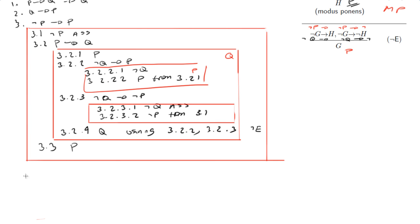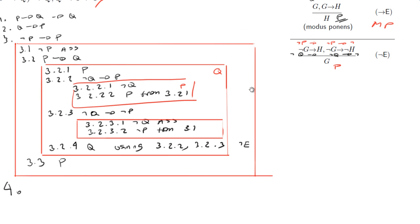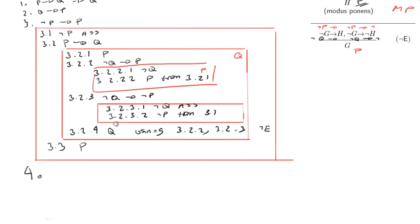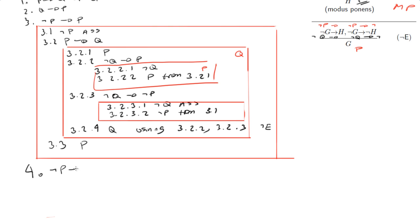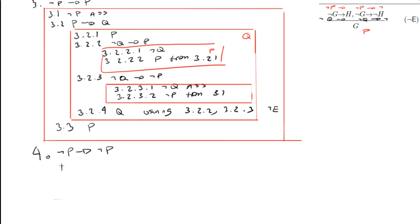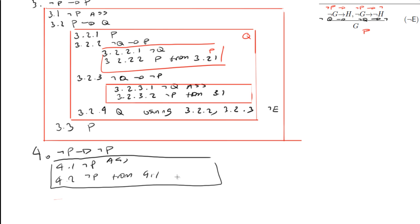Line number four, I can say not P implies not P, which is easy to prove. So 4.1: not P, as assumption. Then 4.2: not P from 4.1. And I can close this off — that's proved.